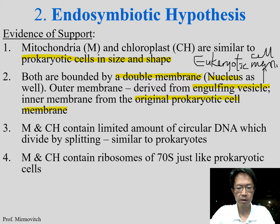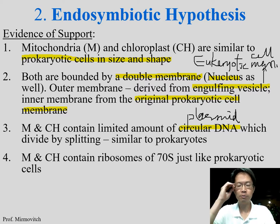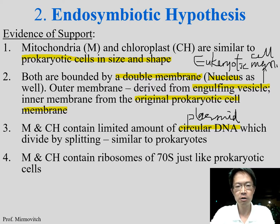Mitochondria and chloroplasts contain a limited amount of circular DNA, which divides by splitting — we call it a plasmid. Prokaryotic cells have a nucleoid as their main DNA and also circular DNA called plasmid, which is like a toolbox — for example, antibiotic resistance is stored in the plasmid. Mitochondria and chloroplasts also have plasmids.